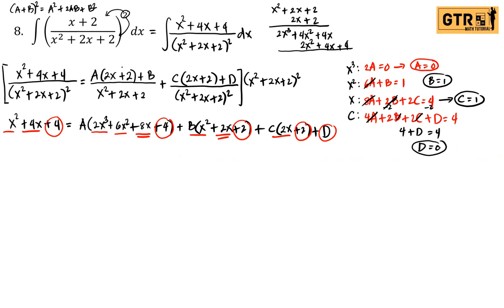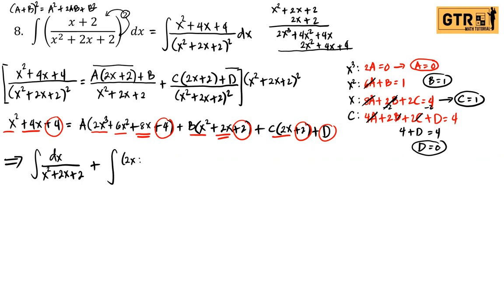Since A = 0 and D = 0, there is no need to write those terms. The integral now equals: integral of dx over (x² + 2x + 2), plus the integral of (2x + 2) dx over (x² + 2x + 2)².